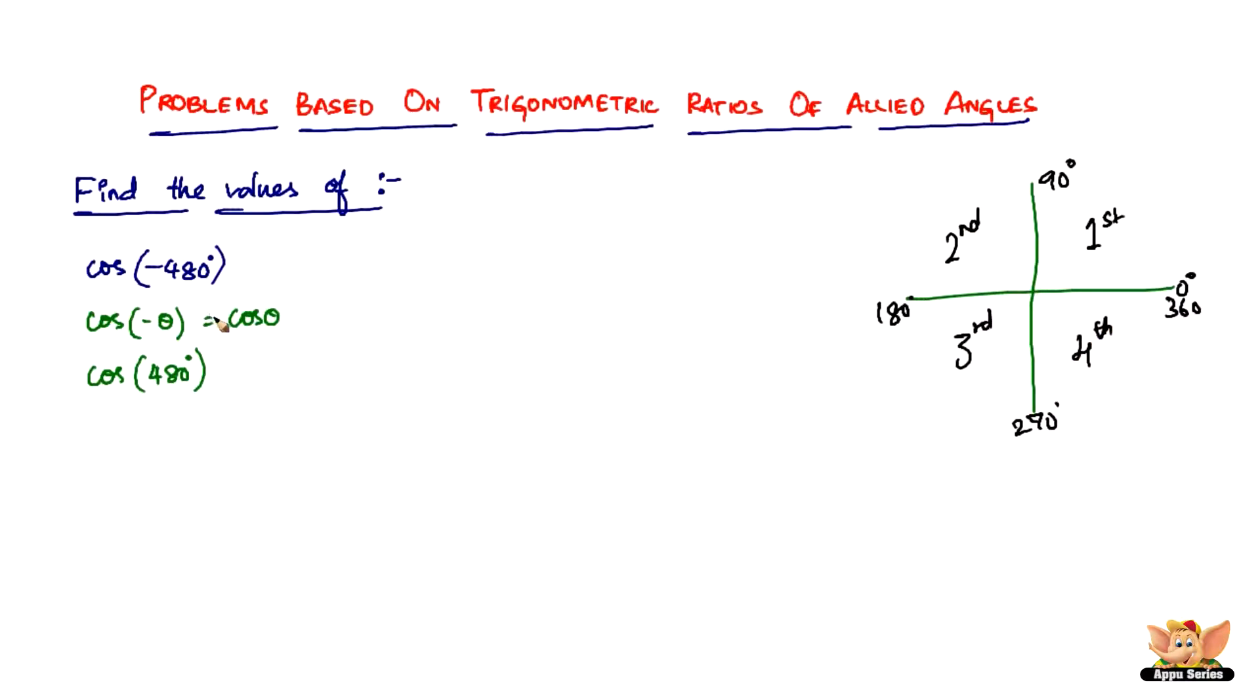What I'm gonna do is teach you a simple method to find which quadrant a particular angle lies in. All you have to do is write it in terms of multiples of 90. So cos can be written as 90 times 5, which is 450 plus 30 degrees, right? Now this number is very important, this 5 is important.